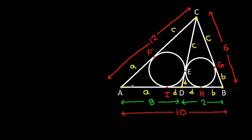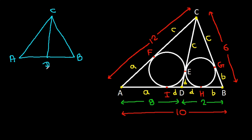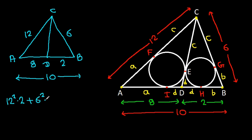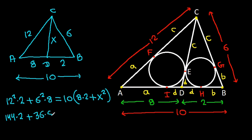Applying this to triangle ABC: AB is 10, AD is 8, BD is 2, AC is 12, and BC is 6. So 12² times 2 plus 6² times 8 equals 10 times (8 times 2 plus X²), where CD equals X. That gives 144 times 2 plus 36 times 8 equals 10 times (16 plus X²).